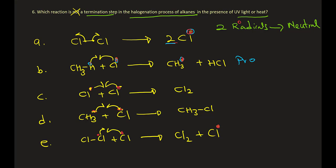Now B, one radical going to one radical. It's a propagation. C, two radicals come to neutral. That's correct. D, two radicals come to neutral. That's correct too. And then E, again, one radical going to one radical, propagation. Now what's the difference between C and D?